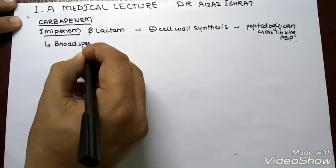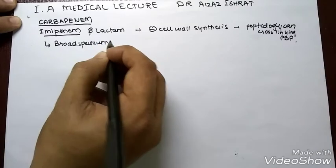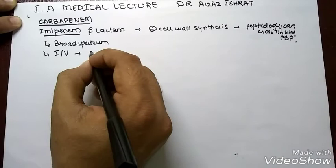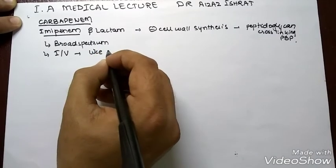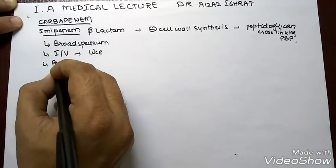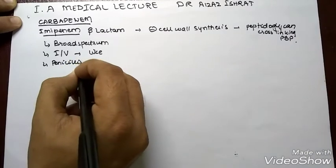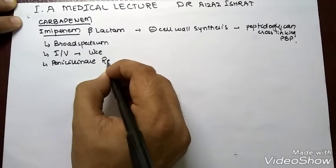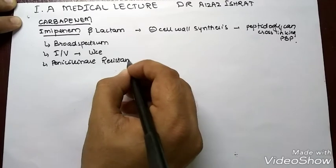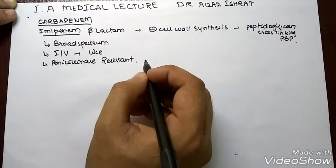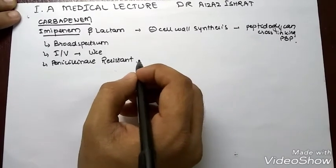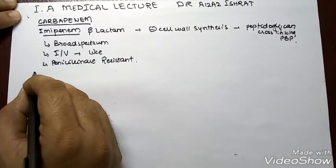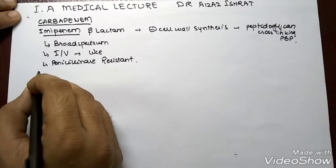Imipenem is broad spectrum. Imipenem can be given IV like aztreonam, and imipenem is penicillinase resistant. This is an important and good point about imipenem.